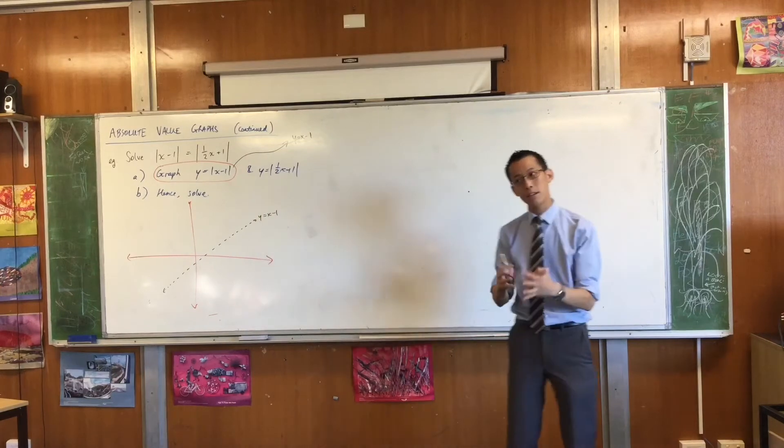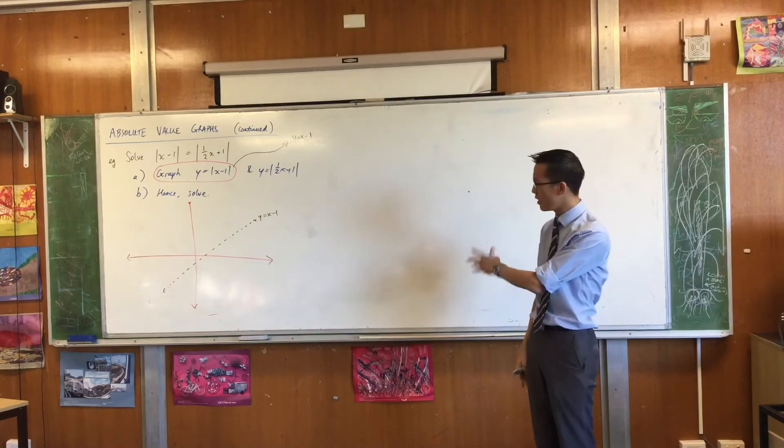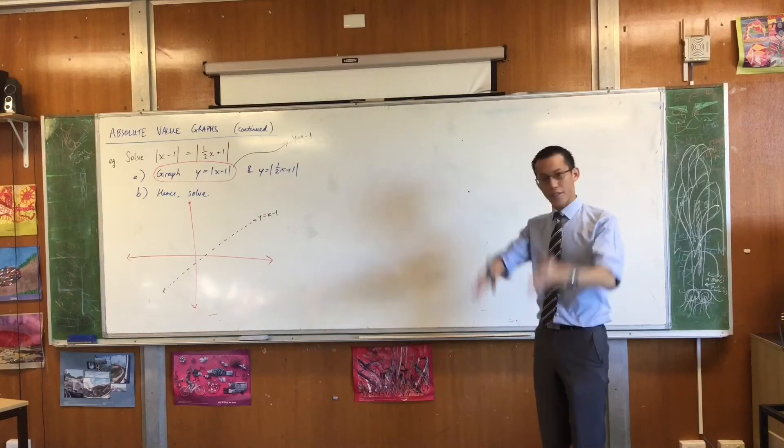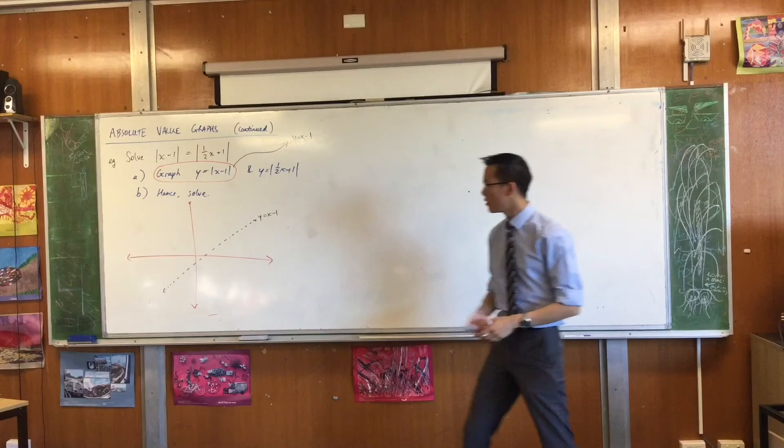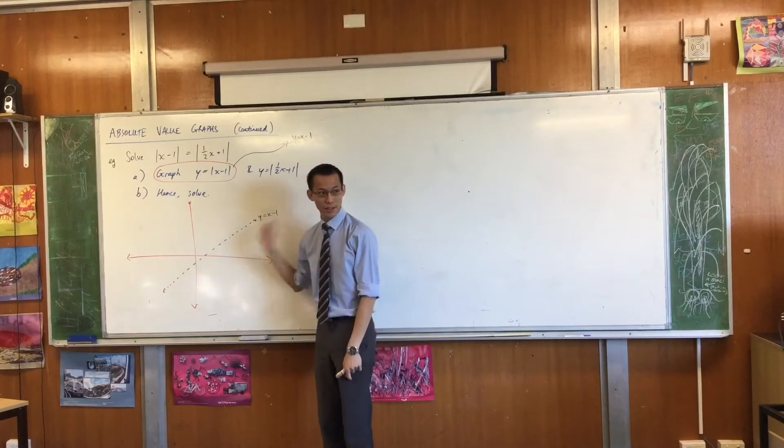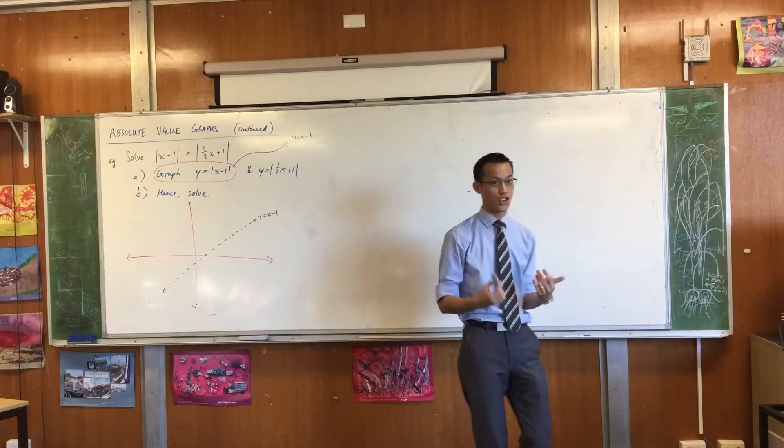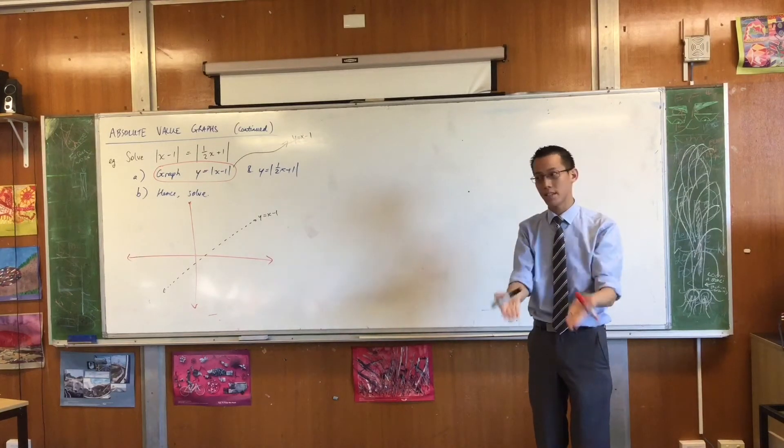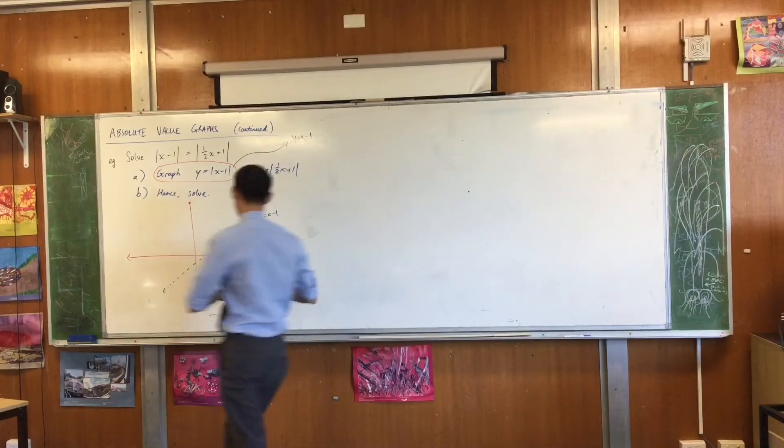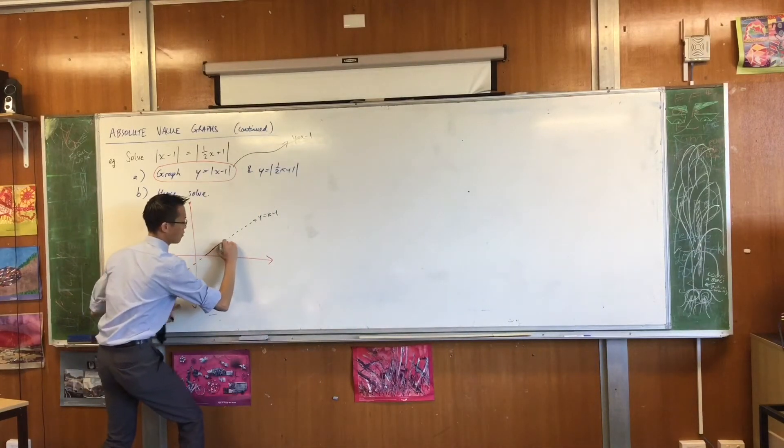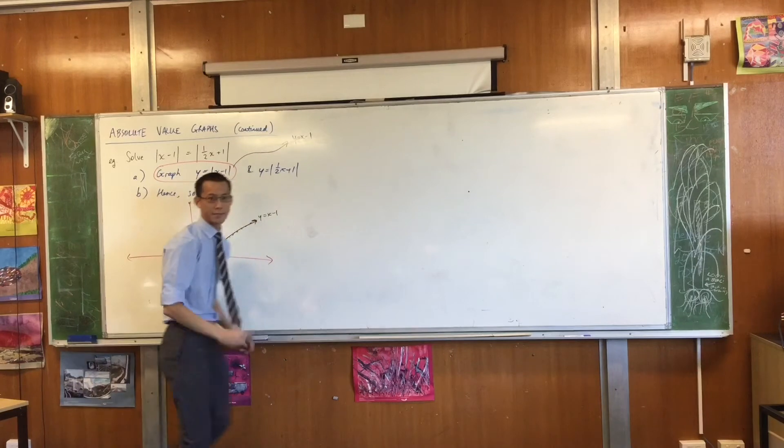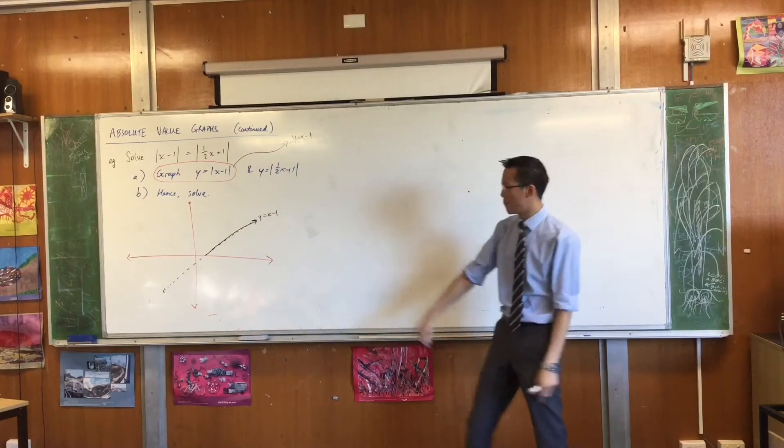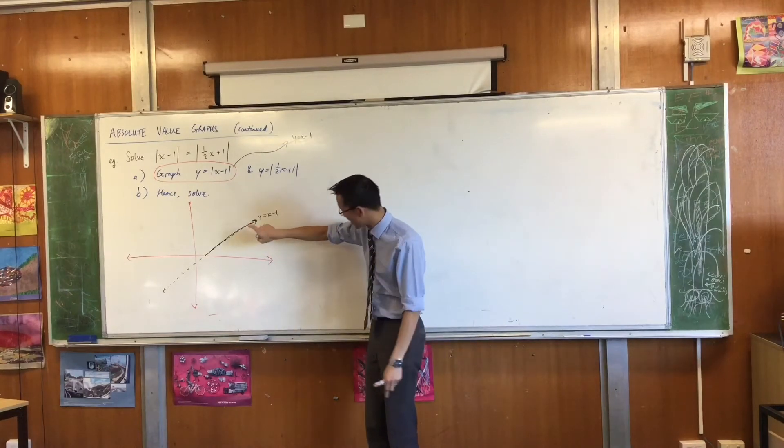Rather than appealing to the algebra, I'm going to look at this thing and say, if that's what regular x minus 1 looks like, what's the difference if I slap absolute value signs around it? Well, when this line is positive, the absolute value of a positive thing is just the thing itself. So see all that stuff that's above the x-axis? It doesn't need to change. The absolute value of that part is still that line.